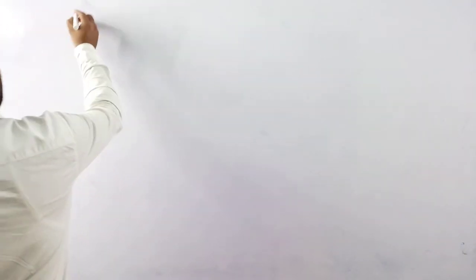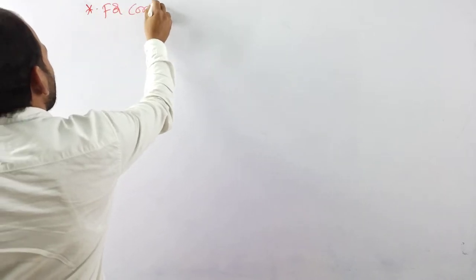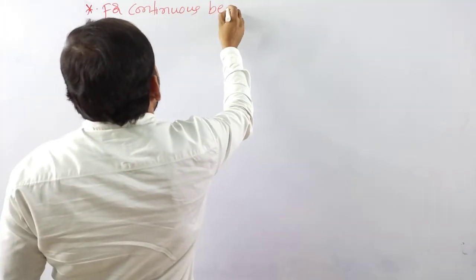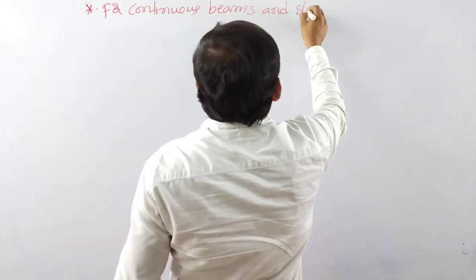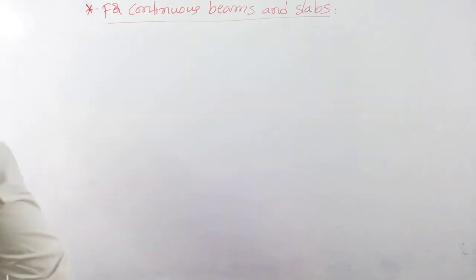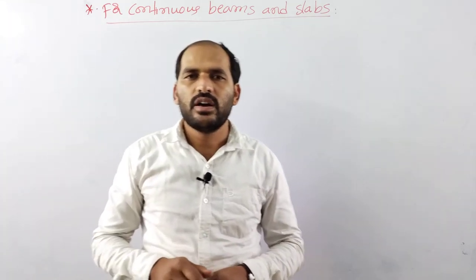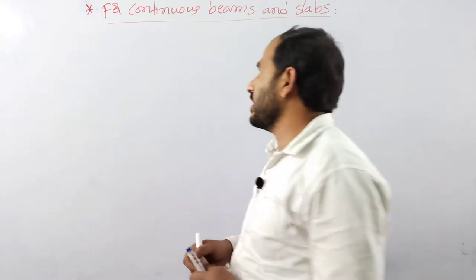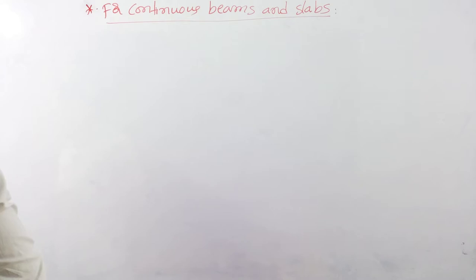In the design of slabs, we deal with hogging moment, sagging moment, and moment balancing for continuous beams and slabs. For continuous beams and slabs, there are four conditions to consider.